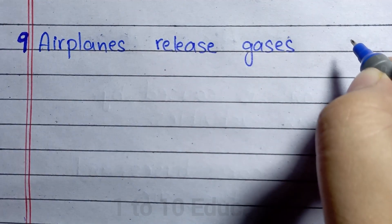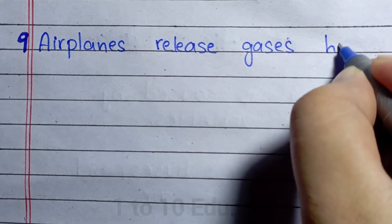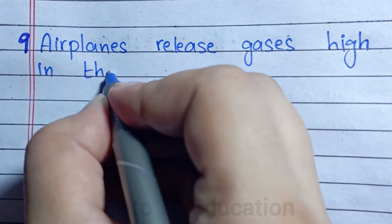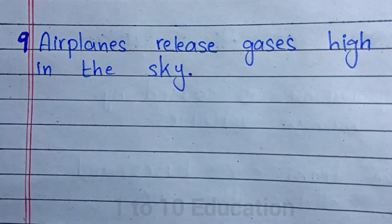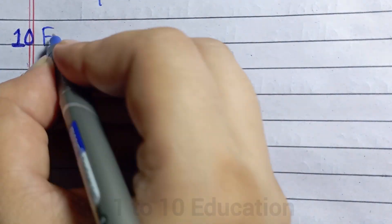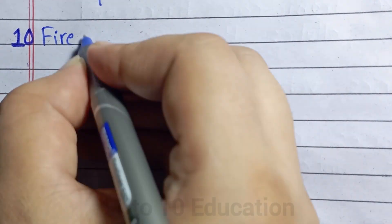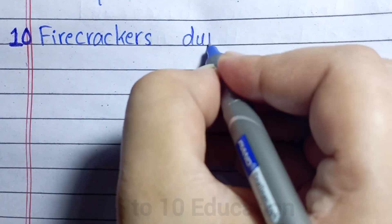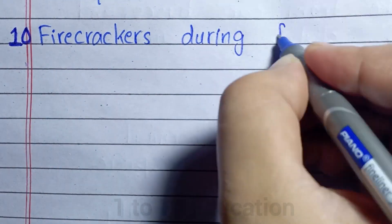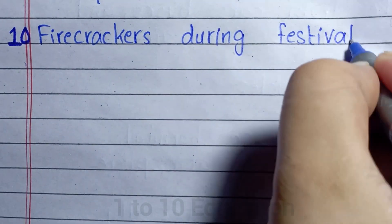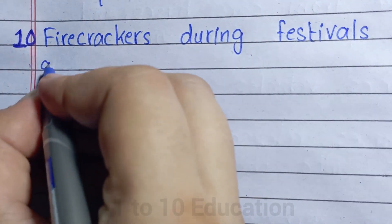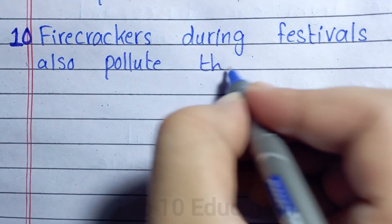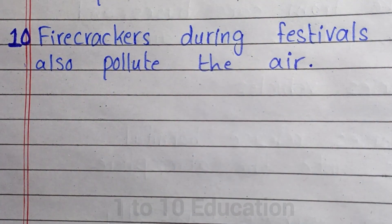Number 9: Airplanes release gases high in the sky. Number 10: Firecrackers during festivals also pollute the air.